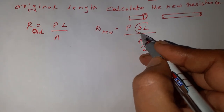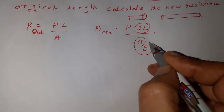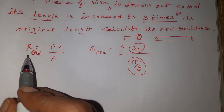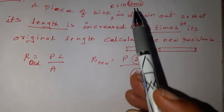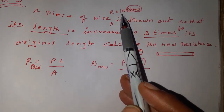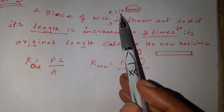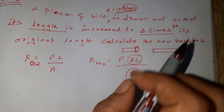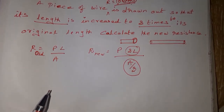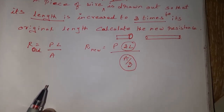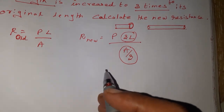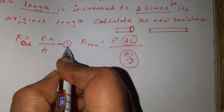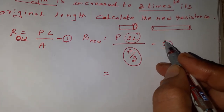The area will be decreased by three times only. We know the old resistance is 10 ohms — that is the resistance before the wire is drawn thin. This is the only given value. We have to calculate the new resistance after it is drawn to three times its original length. Keep the first equation as R_old and the second equation as R_new.